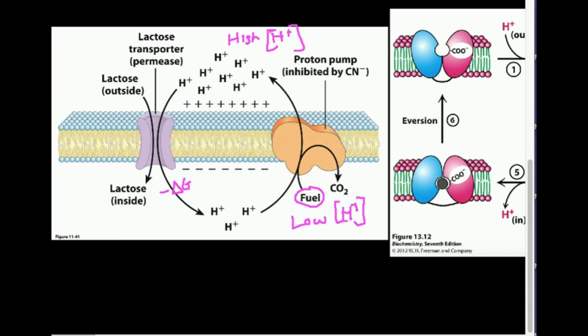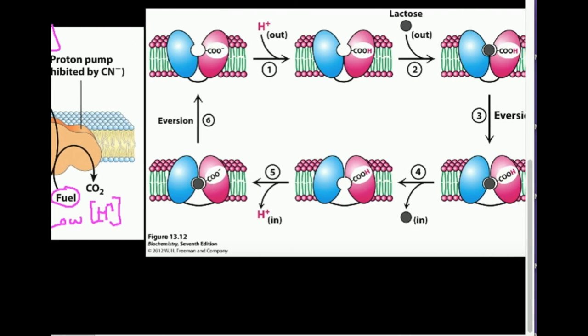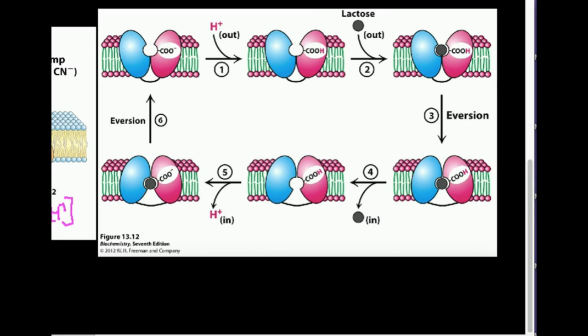So how does it actually work on the molecular scale? Well, here's a diagram taken from a biochemistry textbook, Freeman and Company. So this is the lactose transporter right here. So we start with a high concentration gradient of H plus on the outside. So what's ultimately going to happen is the proton is going to move into this pocket right here.